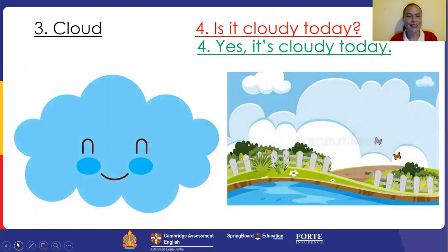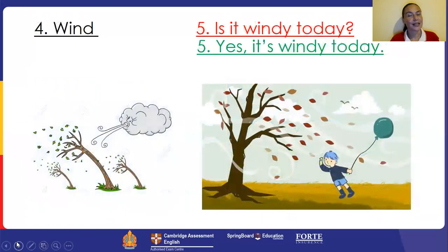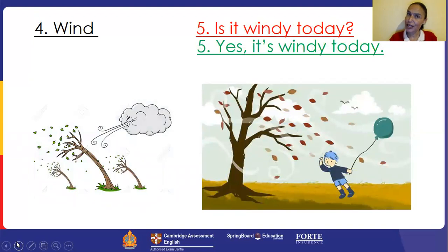Number three, it's a cloud. Cloud. The question is: Is it cloudy today? Is it cloudy today? Good job. Yes, it's cloudy today. Number four: Wind. Wind. Is it windy today? Why don't you look at the picture and tell me, is it windy today? That's right. Yes, it's windy today. Well done. Very good.